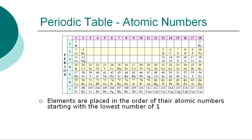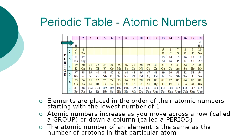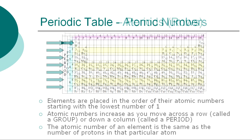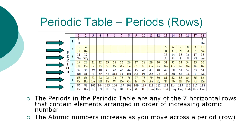Elements are placed in the order of their atomic numbers, starting with the lowest number of 1. Atomic numbers increase as you move across a row, called a group, or down a column, called a period. The atomic number of an element is the same as the number of protons in that particular atom. The periods in the Periodic Table are any of the seven horizontal rows that contain elements arranged in order of increasing atomic number.